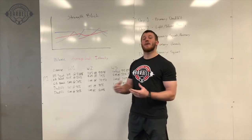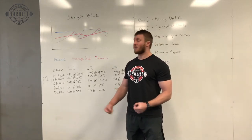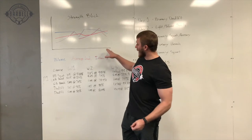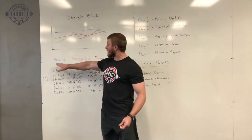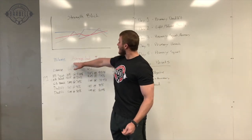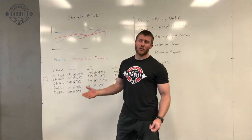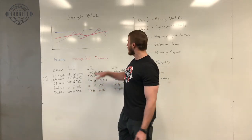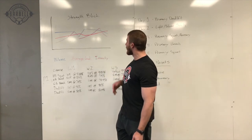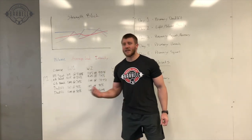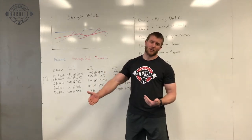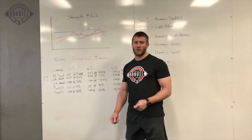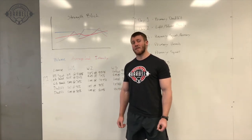This approach has led to some good success for myself and a lot of my lifters. What we're looking at with this chart: the blue line is going to be the volume, the red line is going to be the average load or average percentage of one rep max on the bar, and the purple line is going to be the intensity — essentially the proximity to failure.